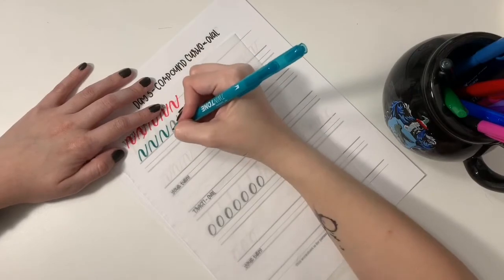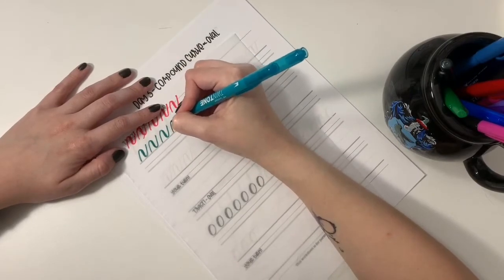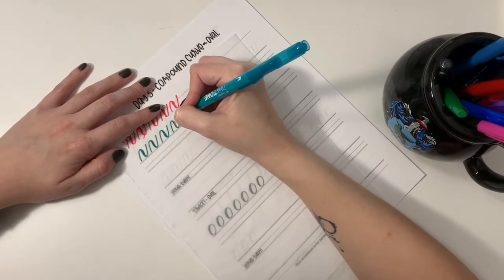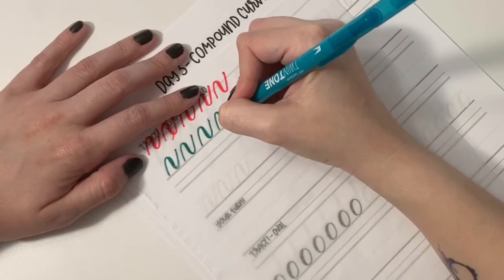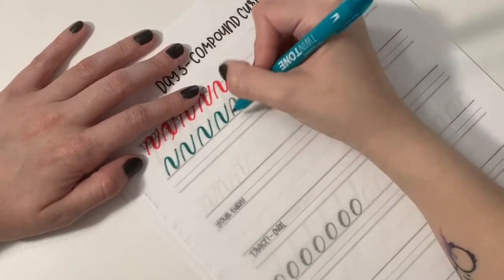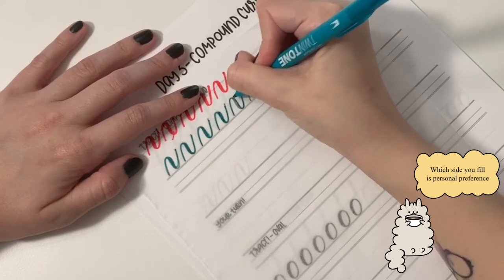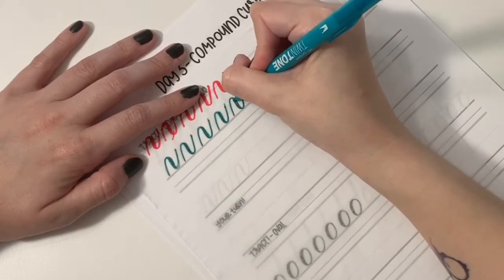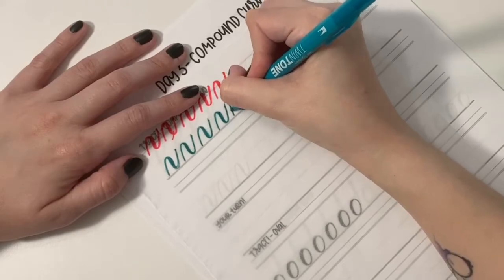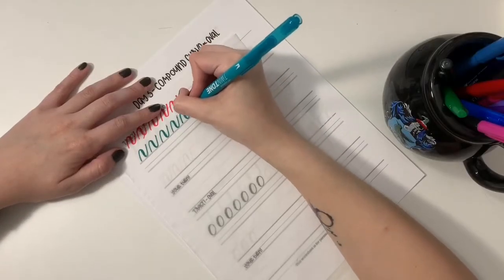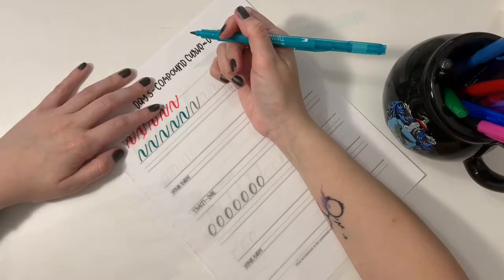And it's personal preference if you want to thicken the inside or the outside of the shape. Like here, I'm thickening the outside. But you can also do the inside. Personally, I like doing the outside, but that's up to you.